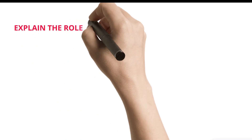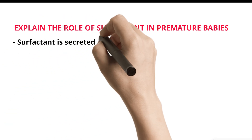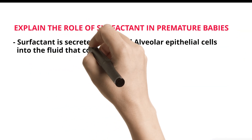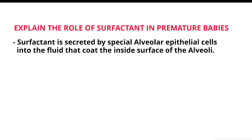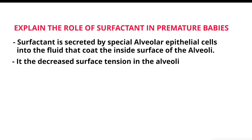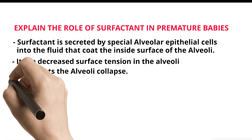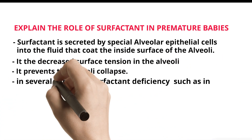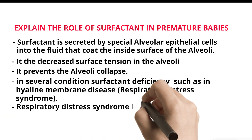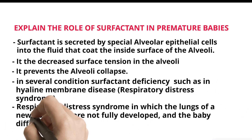Explaining the role of surfactant in premature babies. Surfactant is secreted by special alveolar epithelial cells into the fluid that coats the inside surface of the alveoli. It decreases surface tension in the alveoli and prevents alveolar collapse. In several conditions, surfactant deficiency occurs, such as in hyaline membrane disease, also known as respiratory distress syndrome — a condition in which the lungs of a newborn baby are not fully developed and the baby has difficulty breathing.